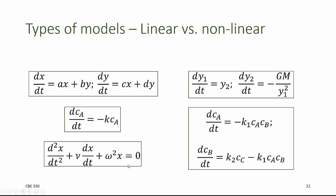Each of the models shown on the left-hand side of this slide represents a linear model. In the first one, x and y are the dependent variables. There are two model equations, and in each equation, x and y and their derivatives only appear in linear combinations. In the second model, cA is the dependent variable, and again it only appears in linear terms. The third model contains a sum of the second derivative of x, the first derivative of x, and a term containing x. As long as nu and omega squared are constants, then this is a linear model. The models shown on the right-hand side are nonlinear. While the first model equation is linear, the second model equation is not because one of the dependent variables appears in the reciprocal and is squared — that's a nonlinear term. This model is nonlinear because we have a nonlinear combination of cA and cB appearing in both model equations.